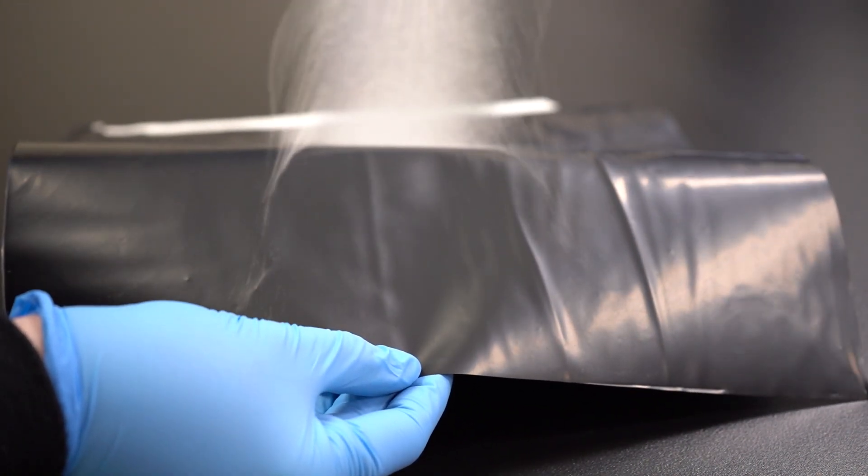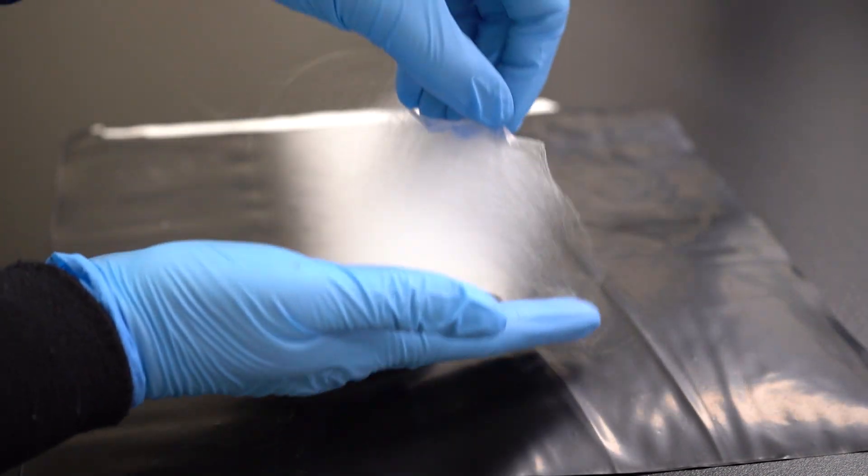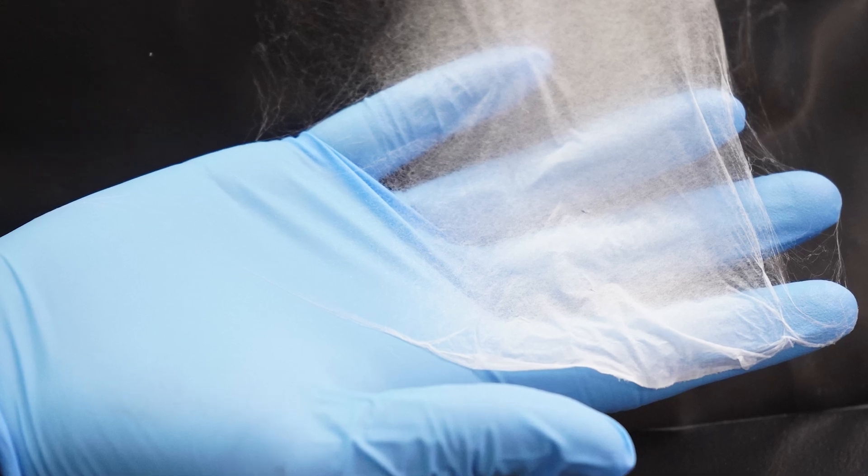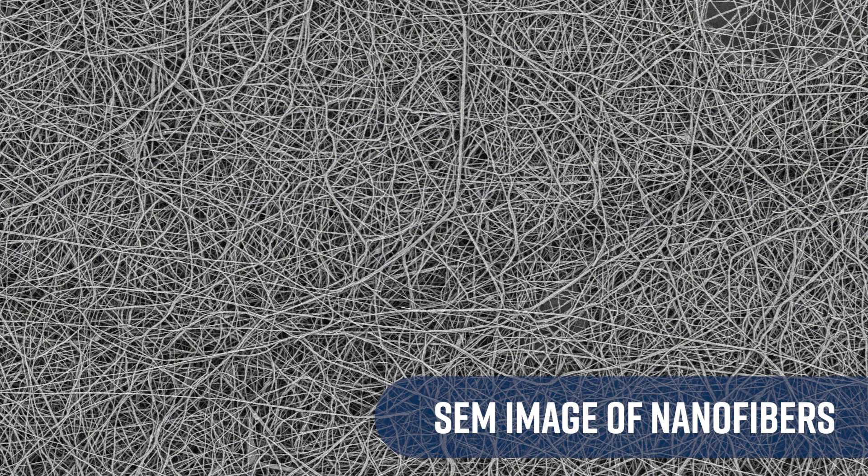And there you have it, folks. You've successfully electrospun some nanofibers. Keep in mind that there are many variables you can adjust to achieve different results. The choice of polymer, solvent, voltage, flow rate, and many other factors all impact the resulting nanofiber structure.